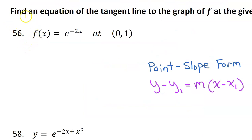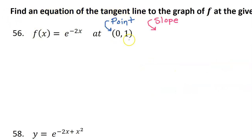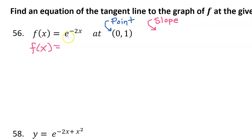For number 56, they are asking us to find an equation of the tangent line to the graph of f at the given point (0, 1). Whenever they ask me to find an equation of a line, I always like to use point-slope form, because this tells me I need two things: a point and the slope. We are already halfway done because they gave us the point — it's the point of tangency. So all we really need is the slope. In order to find the slope, we will find the derivative, which gives us the slope at any point including this one. We need to find the derivative of f of x using the chain rule.